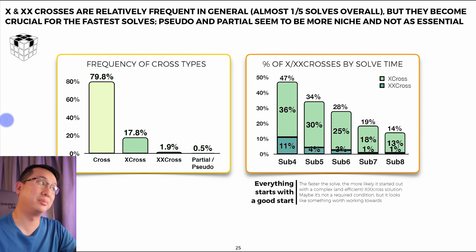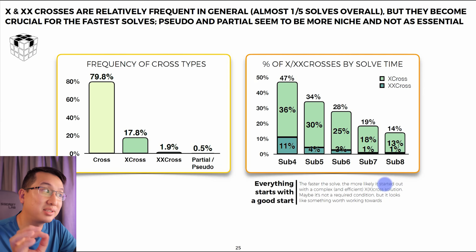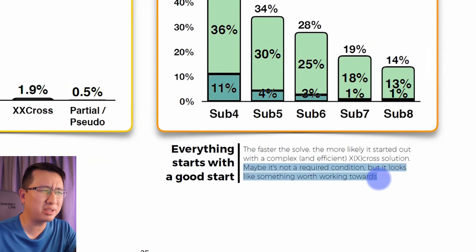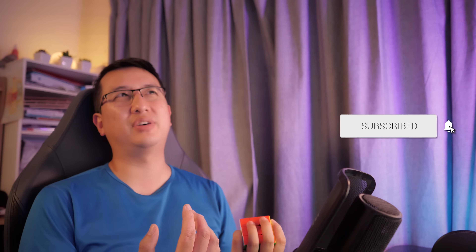Now we enter the world of the X cross or double X cross. In the fastest solves, X crosses were pretty common. If you want to be sub-8, sub-7, or sub-6, a good 20–25% of your solves need to have an X cross. I don't yet reliably plan an X cross, and the question is: do I need to learn? The authors put it well — maybe it's not a required condition, but it's worth working towards. For you and me personally, we don't have to learn X crosses to be fast, but why wouldn't we? It requires patience and practicing with unlimited inspection time.